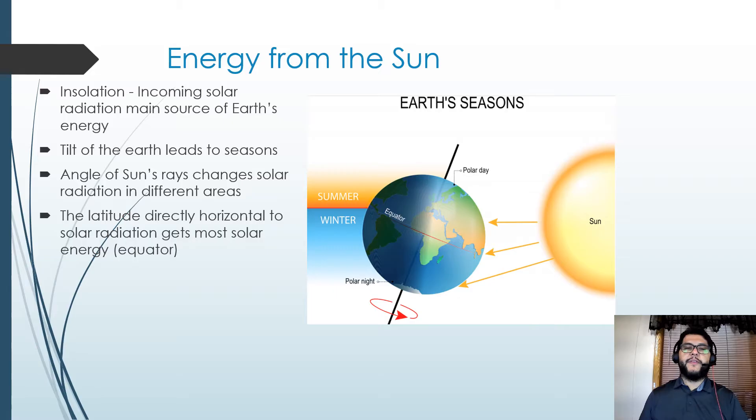Number one is going to be that tilt of the Earth and the fact that solar radiation tends to be uneven, right? So the equator tends to get sunlight pretty much the whole year round, and the northern and southern hemispheres, depending on where they are, are going to end up having different seasons.